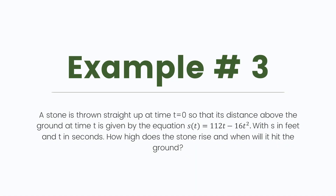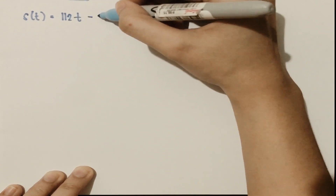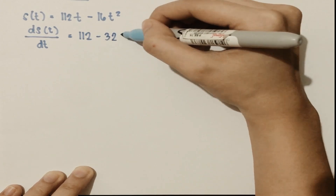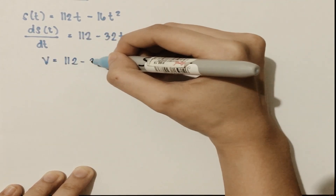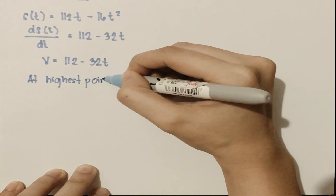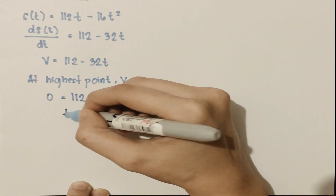Example number 3: a stone is thrown straight up at time equal to 0 so that its distance above the ground at time t is given by s of t is equal to 112t minus 16t squared, with s in feet and t in seconds. How high does the stone rise and when will it hit the ground? We need to differentiate it to get the velocity function, which is 112 minus 32t. At the highest point, the velocity is equal to 0, so substituting v equal to 0, we get the time equal to 3.5.